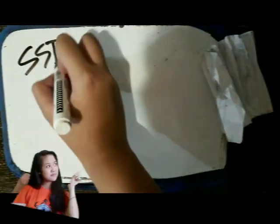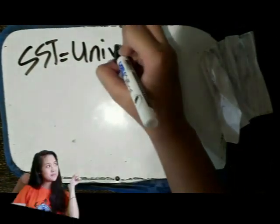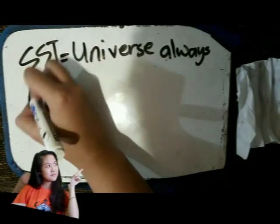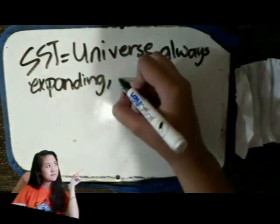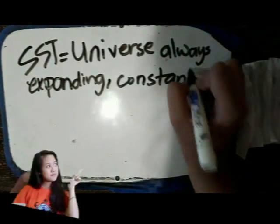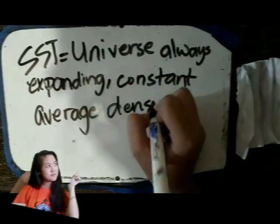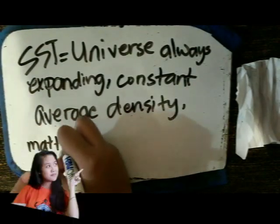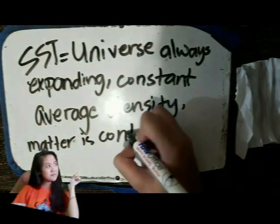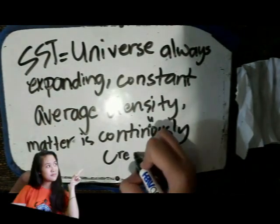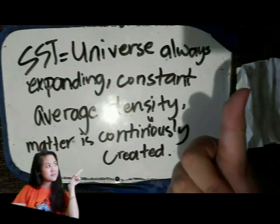In conclusion, the steady state theory is the view that the universe is always expanding but maintaining a constant average density, as matter is continuously created to form new stars and galaxies at the same rate as existing ones become unobservable as they recede with the expansion.